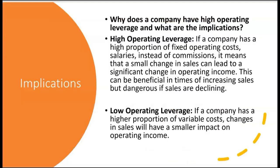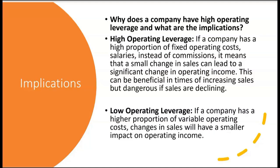Why does a company have high operating leverage and what are the implications? If a company has a high proportion of fixed operating costs — paying salaries instead of commissions — a small change in sales can lead to a significant change in operating income. This is beneficial in times of increasing sales and growth, but dangerous if sales decline because fixed costs like salaries still have to be paid. A hospital is a great example: doctors and nurses are on salary, not commission, so those salaries must be paid even if the hospital has trouble collecting revenue.